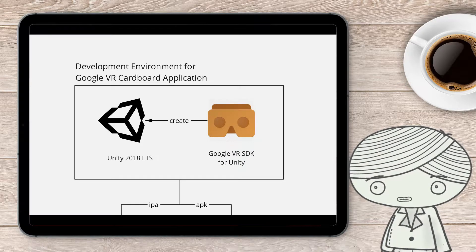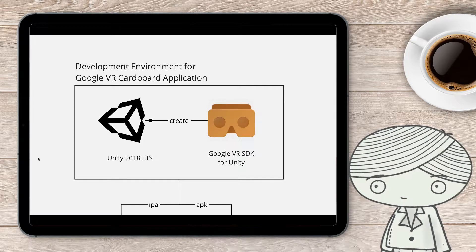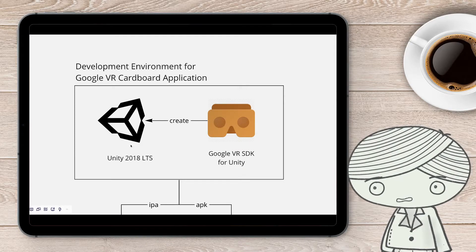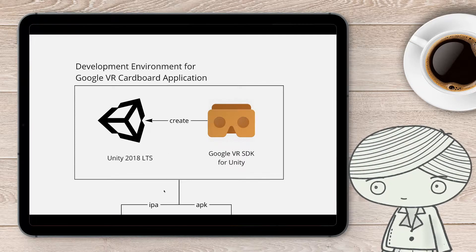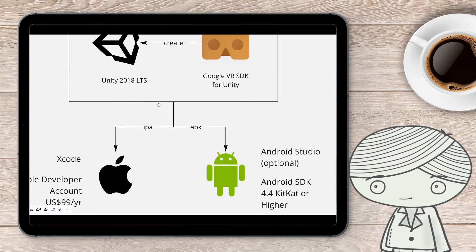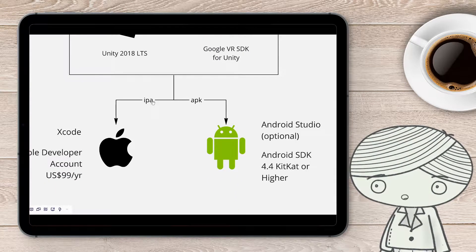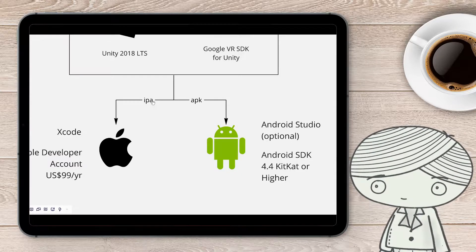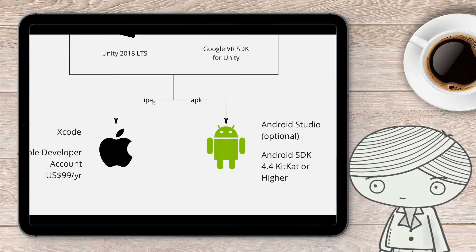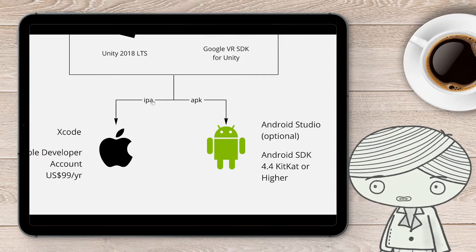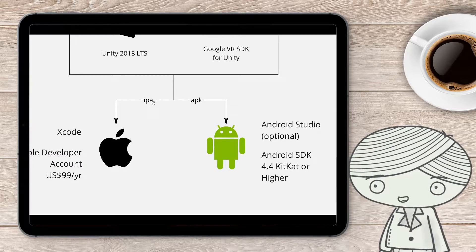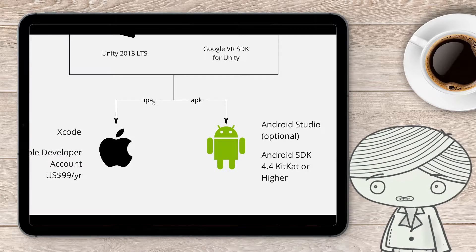Let's take a look at the components needed to build a Google VR Cardboard application using Unity. The first element is Unity itself, but before that, let's look at the deployment platforms. There are two target platforms: one is your iPhone or iOS device, and the other is your Android device. You need to make sure your computer can build applications for both platforms before you build anything in Unity.